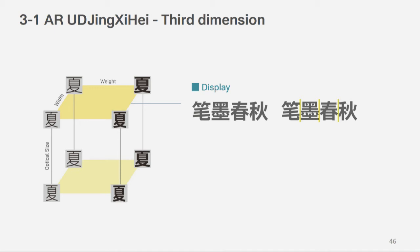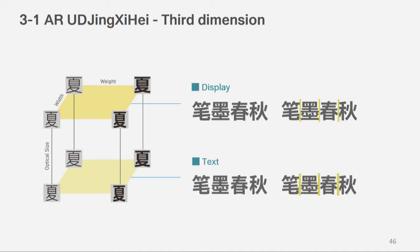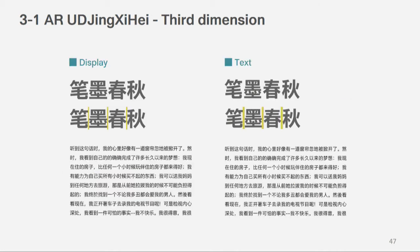This is optical size. This version is for display, and this is for text. You can see for text, we have to narrow down the Chinese character, with more space between characters for easy recognition. So the right side is text and the left side is for display — for that character size, that pointer size.